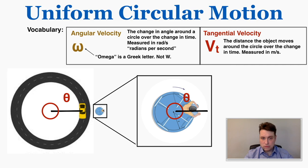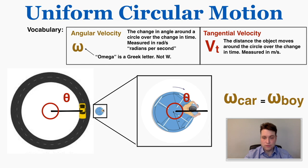The symbol for angular velocity is omega (ω) — when drawing it, make sure the two sides curl in. The angular velocity of the car — how much angle it covers over time — is actually equal to the angular velocity of the boy, even though the tangential velocity of the car is much greater. The car is much faster, but it goes around its circle at the same angular rate as the boy goes around his. So the angular velocity is the same, but the tangential velocity is different.